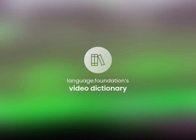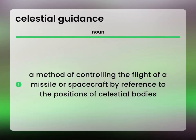Language.Foundation's Video Dictionary, helping you achieve understanding. A method of controlling the flight of a missile or spacecraft by reference to the positions of celestial bodies.